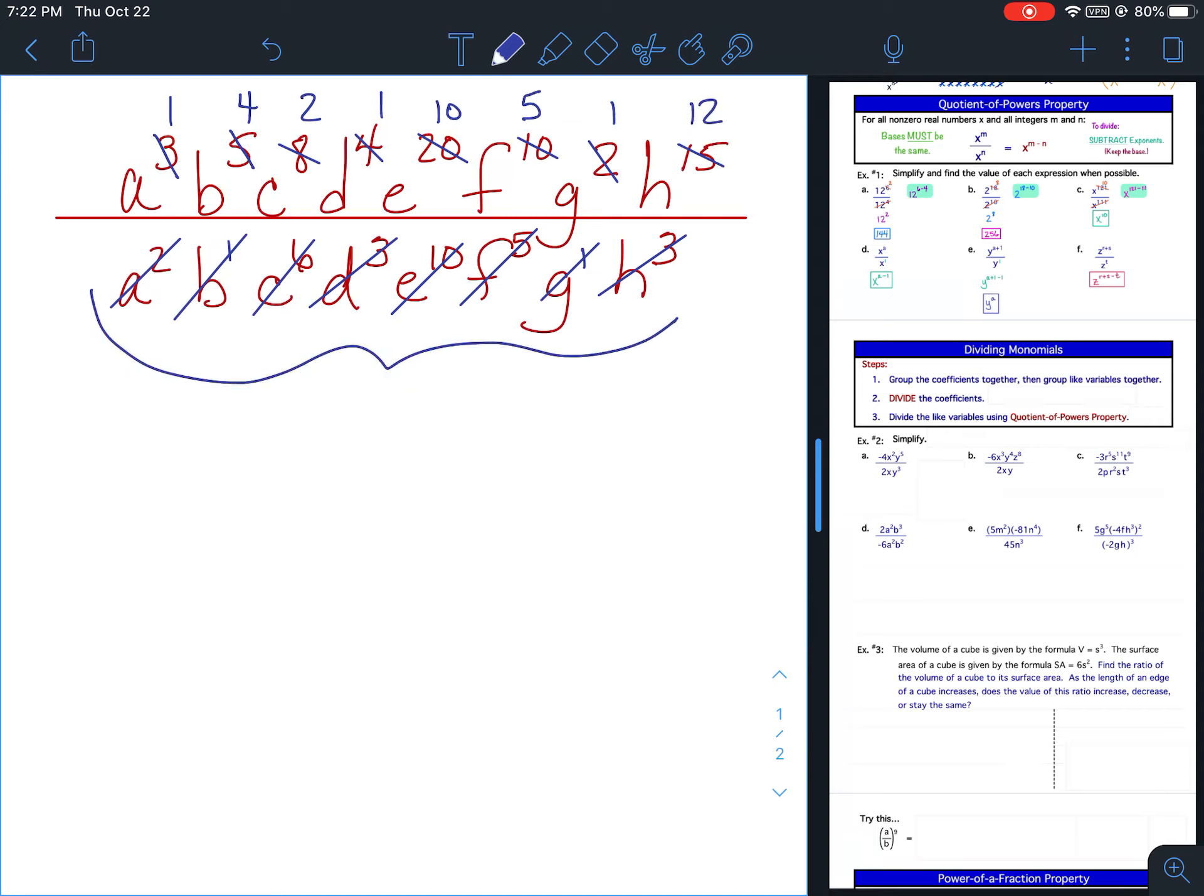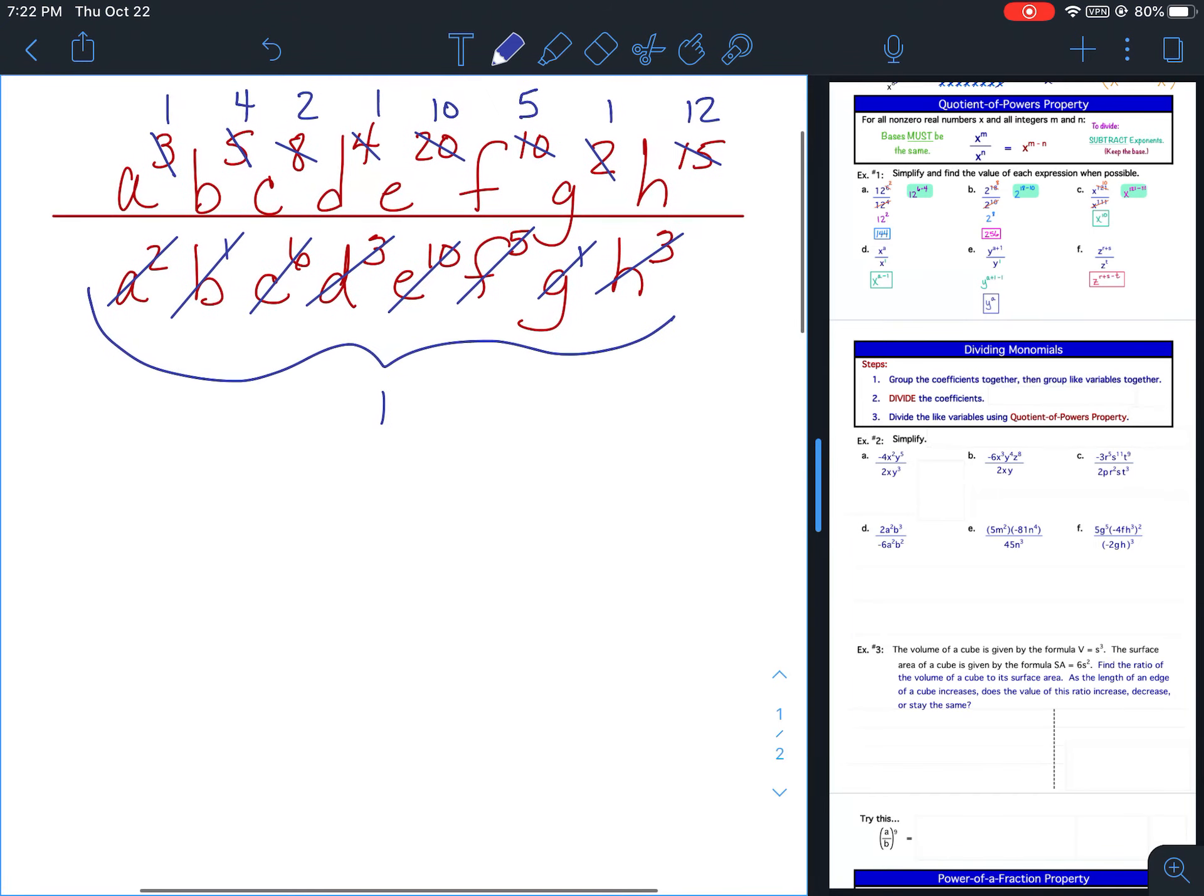Notice how there is nothing left on the bottom, everything gets crossed out, so that would technically be a 1, which when there is a 1 in the denominator you don't need to worry about it. So my final answer here would be a b to the 4th c squared d e to the 10th f to the 5th g h to the 12th. Notice the ones that had an exponent of 1, I didn't bother writing the 1 because we don't need the ones.